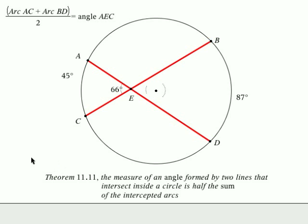This theorem says the measure of an angle formed by two lines that intersect right here in the middle inside a circle is half the sum of the intercepted arcs. So here's one intercepted arc from A to C and here's another intercepted arc from B to D. So what this means is that this angle right here, 45, and this angle here, 87, if we add those together and divide by two it should equal this angle here formed by these two lines crossing.